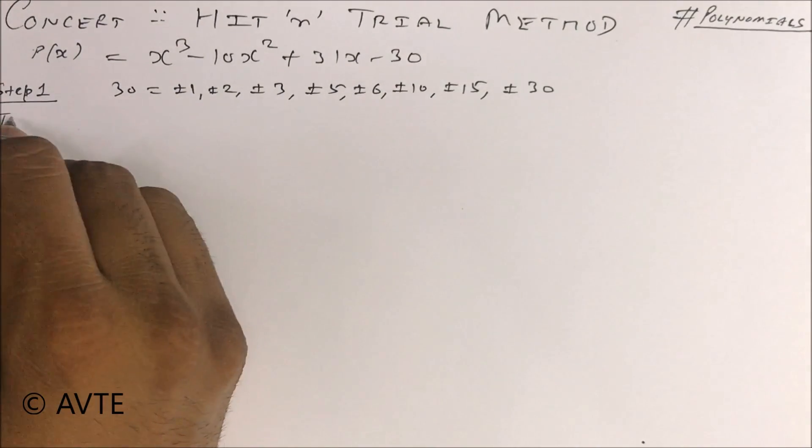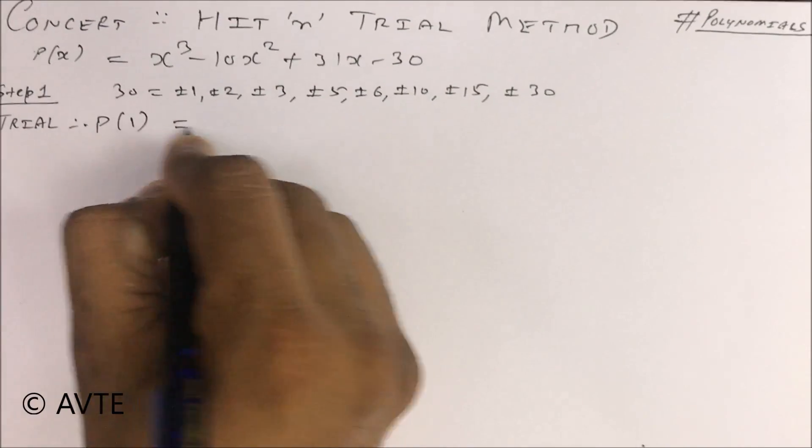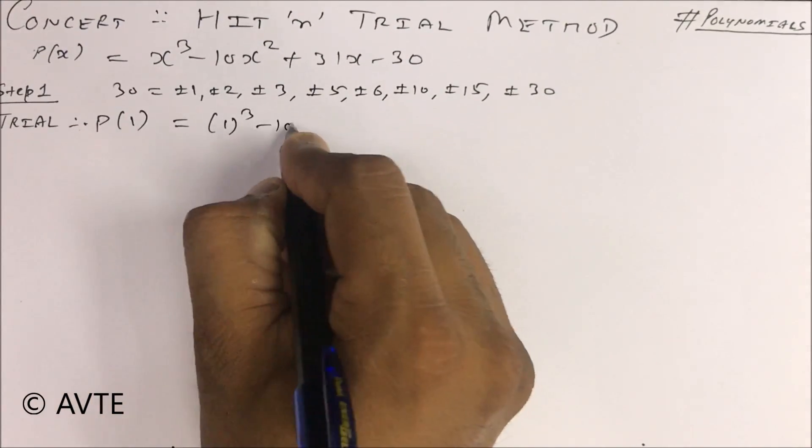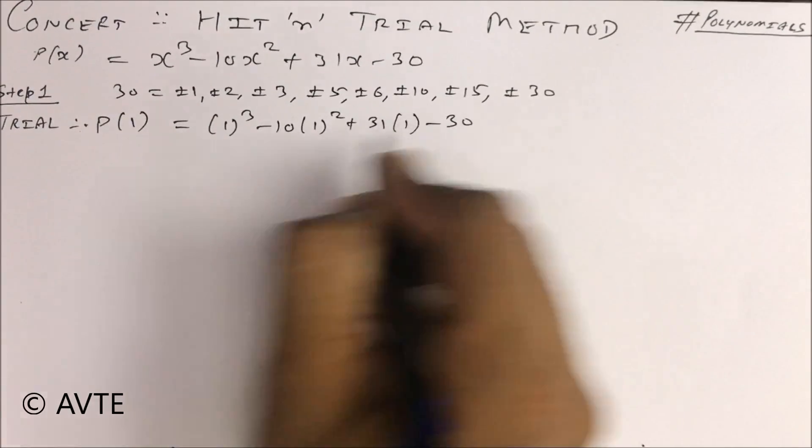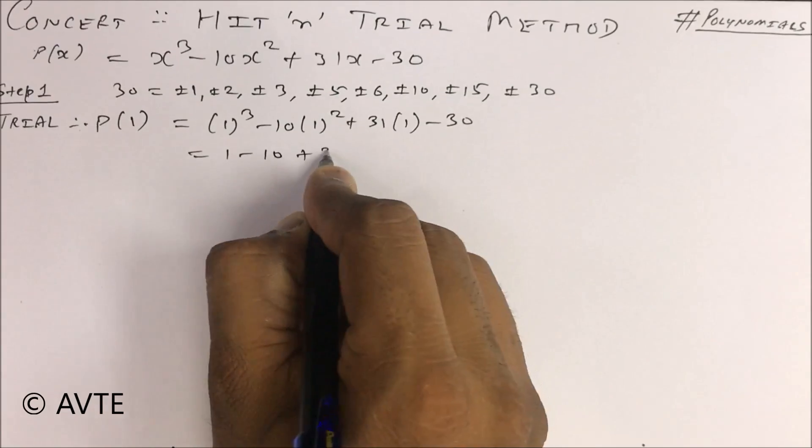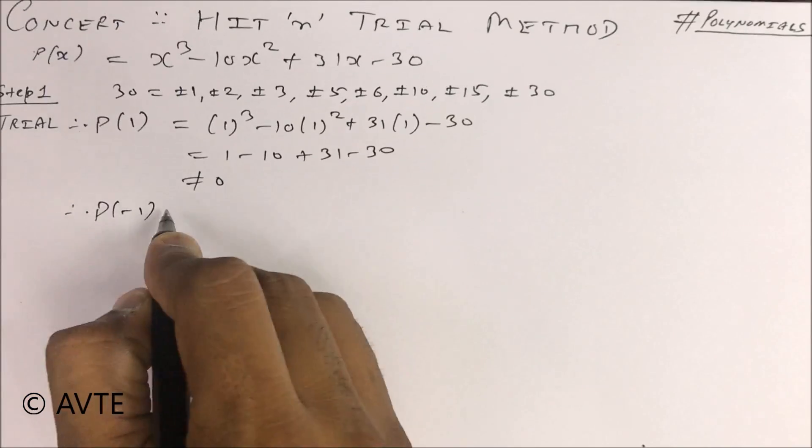First you have to do trial. You find P(1), that is 1³ - 10(1)² + 31(1) - 30. The answer is not 0. Then you trial -1.